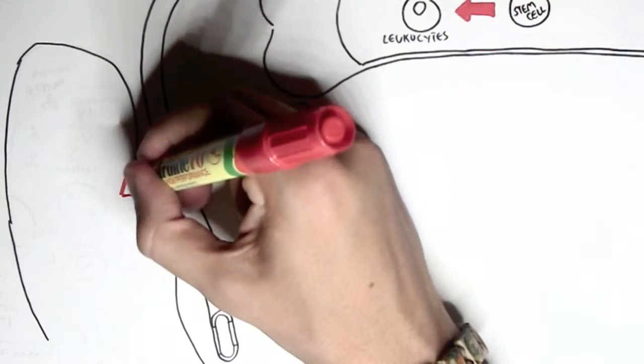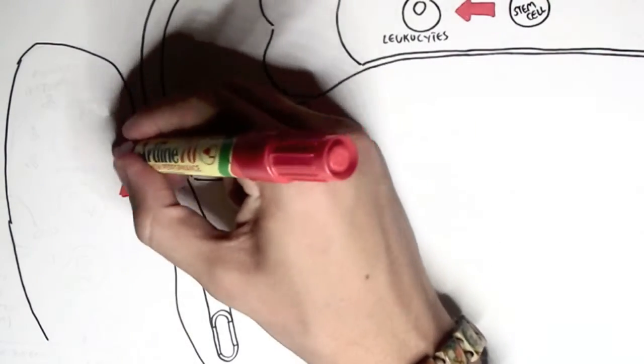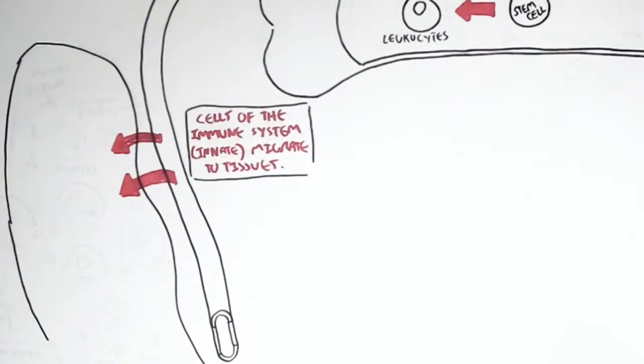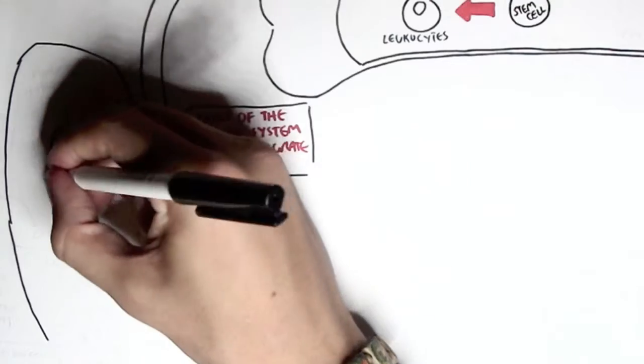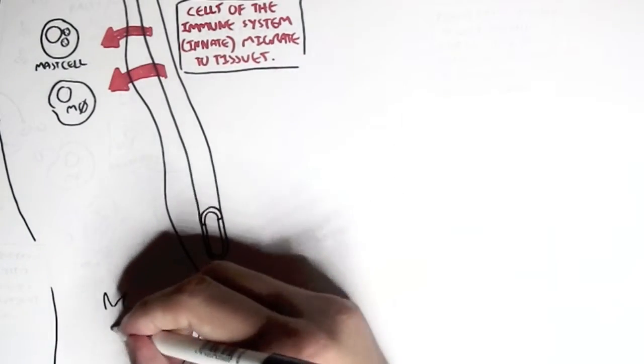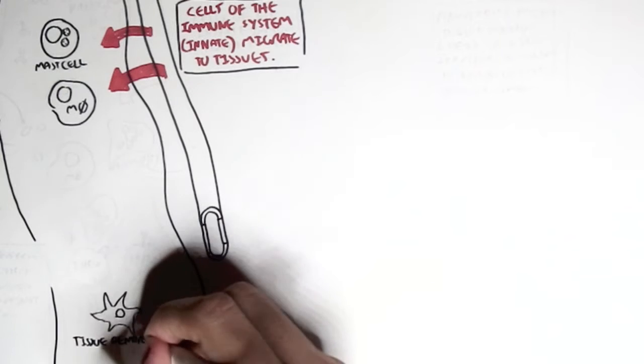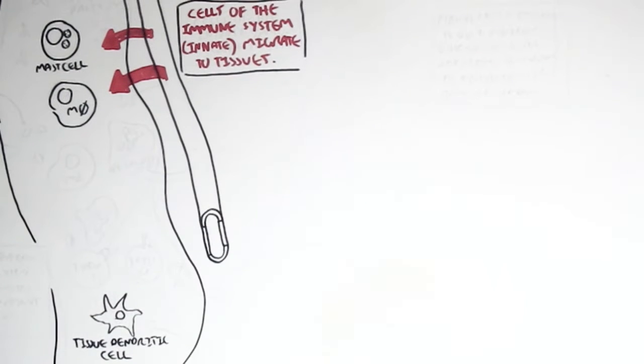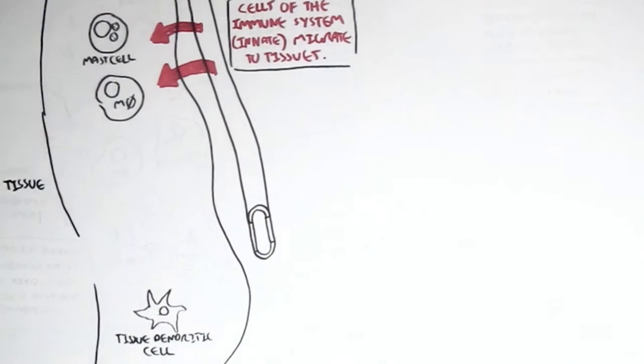Specifically the innate immune cells because they are the first line of defense in the immune system. And we will see how they migrate into the tissues. Remember that this is not exactly what happens in our body. This is just an overall picture to help you get a better understanding of how these immune cells and the immune system work together.